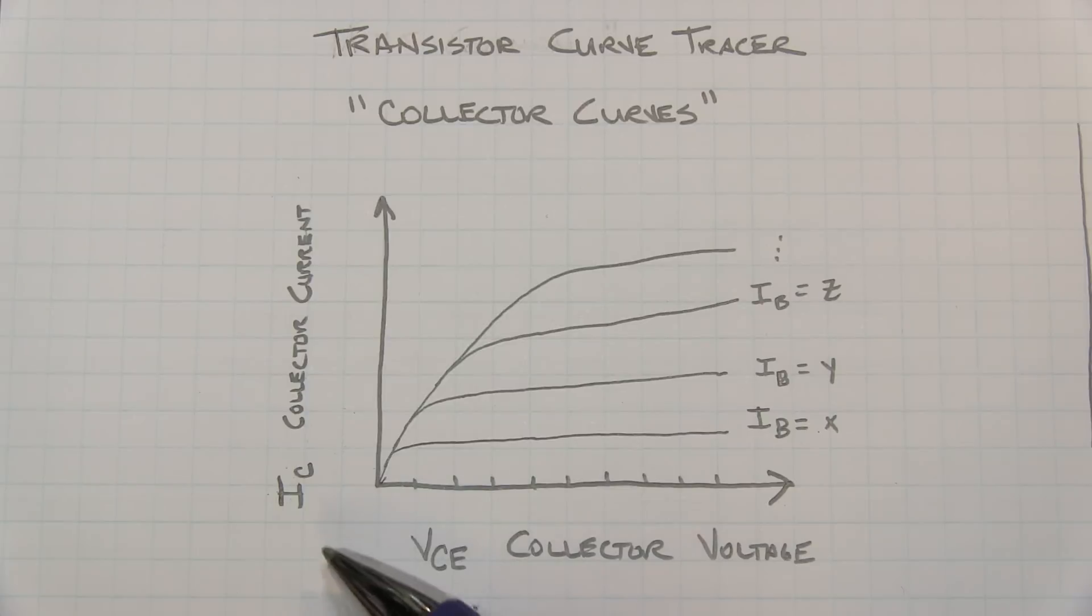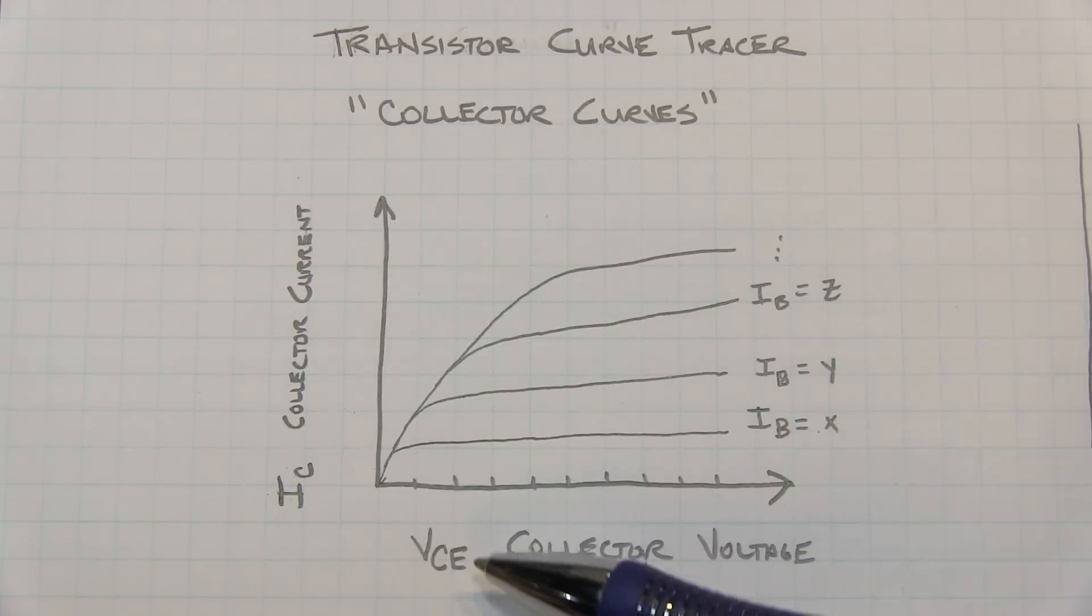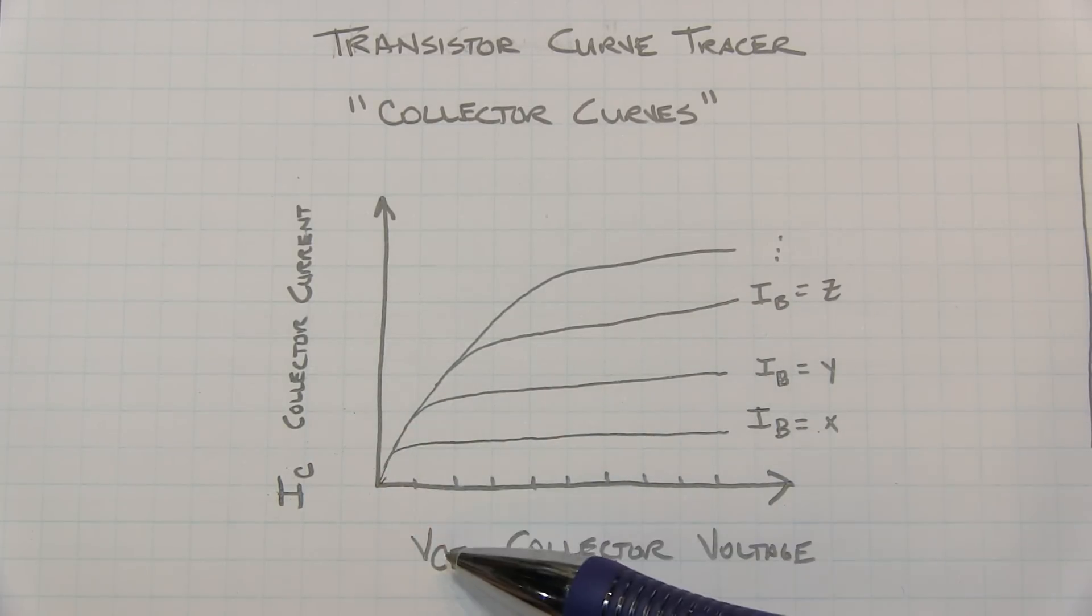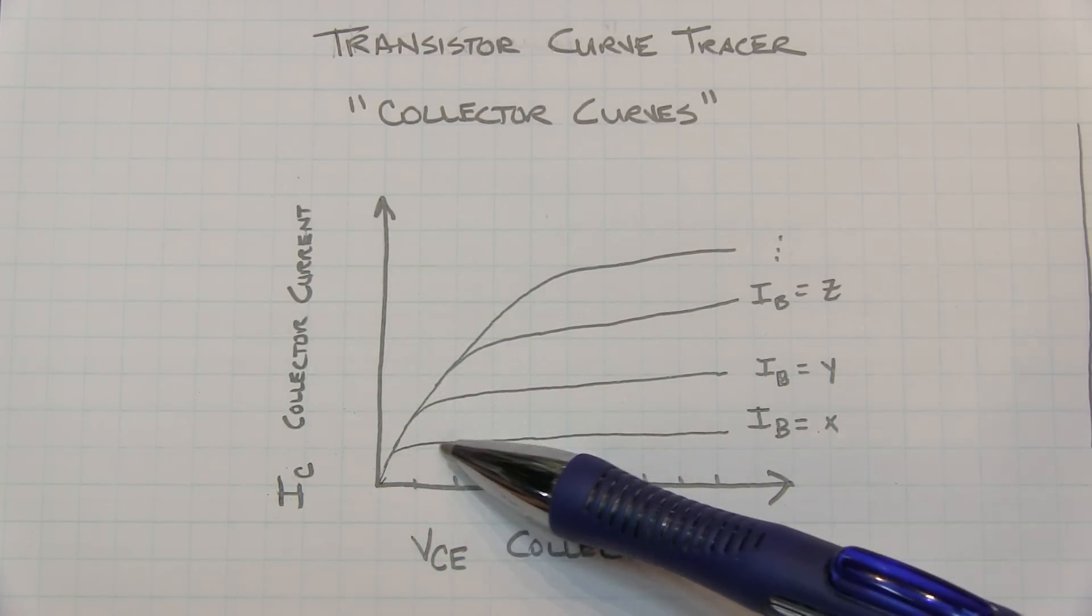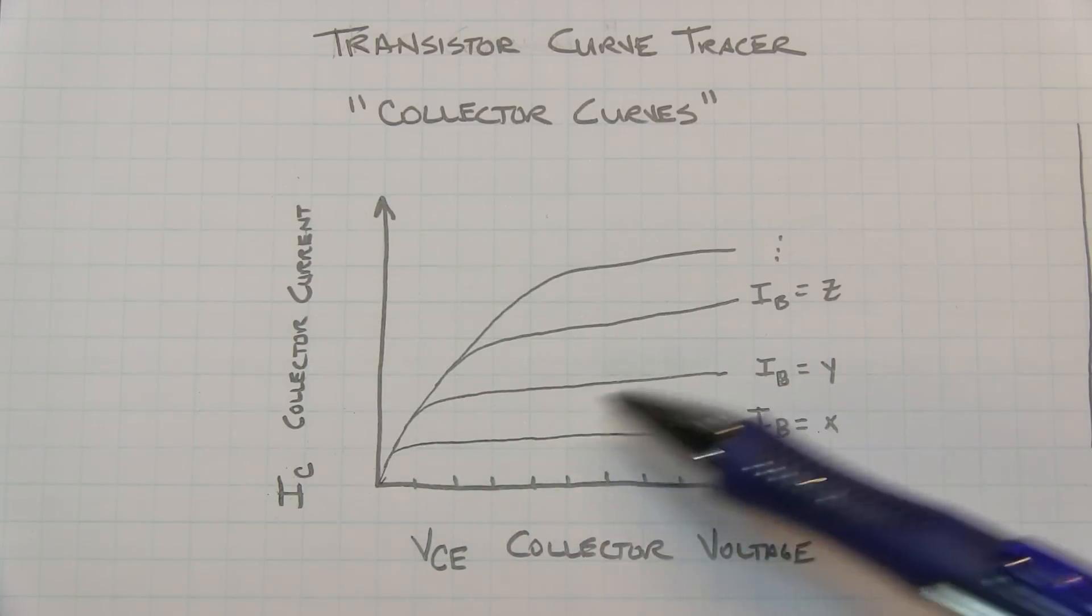What this is really showing is that for a given base current, at a fixed base current, as we ramp the collector voltage up, what happens to the collector current? We kind of come out of saturation when VCE is very low, and then we reach a nearly constant current for the rest of the collector emitter voltage.